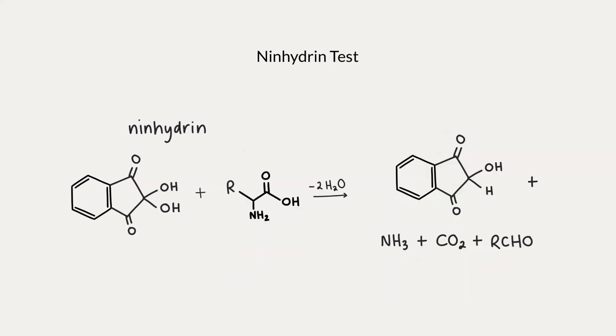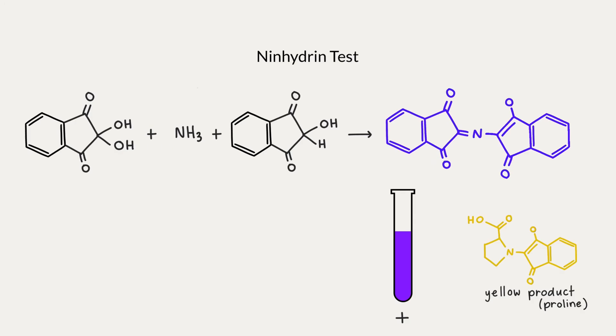The ninhydrin test also works to detect the presence of amino acids. Triketohydrindene hydrate, or more simply ninhydrin, is a powerful oxidizing agent used to detect amino acids. We add ninhydrin solution to an amino acid or protein solution and heat it. The principle is that ninhydrin degrades the amino acid into aldehydes, ammonia, and CO2, producing a partially reduced form of ninhydrin. Then more ninhydrin condenses with ammonia and the partially reduced ninhydrin to produce an intensely blue-purple product called Ruhemann's purple.